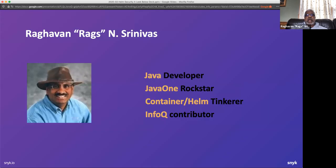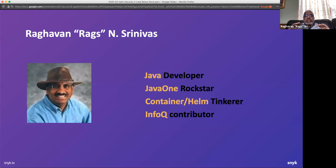My name is Raghavan Srinivas and I work as a lead container developer advocate at Snyk. I worked at Sun for a long time, so I'm a Java guy, but I've been doing container stuff and Helm as well. I come from a Cloud Foundry background, which means I expect things to just work, and I think Helm makes it possible. But the onus is also on the developer to make sure that Helm charts do not have any vulnerabilities, which is what Matt and Haley will address during this webinar.